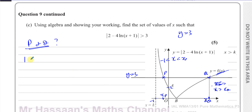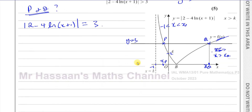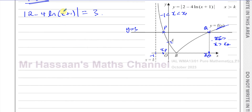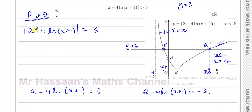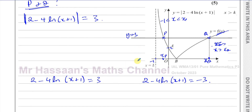So we need to find points P and Q. We can solve the equation: the modulus of 2 minus 4 times ln of (x plus 1) equals 3. We can get two branches: either 2 minus 4 times ln of (x plus 1) equals positive 3, or 2 minus 4 times ln of (x plus 1) equals negative 3. Those two branches will produce the two solutions.